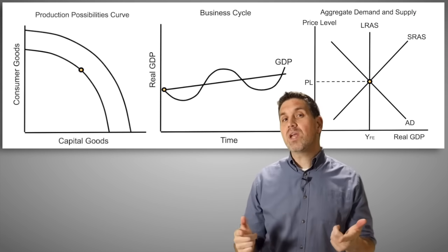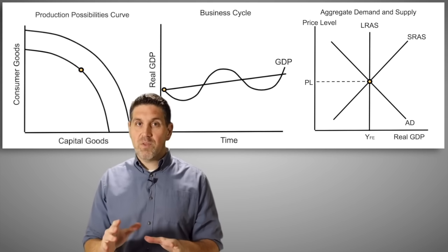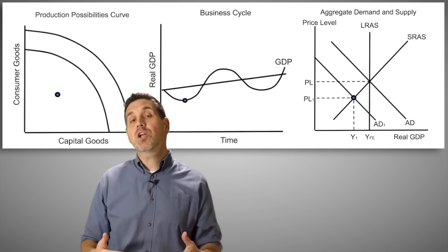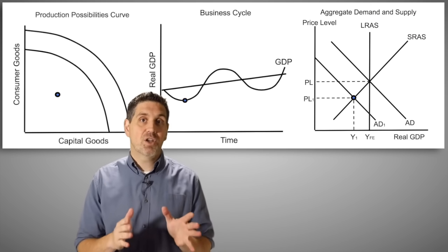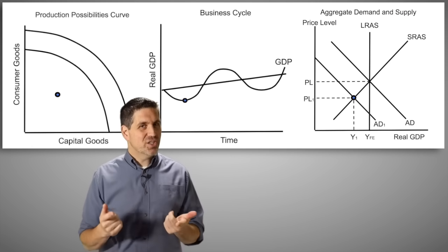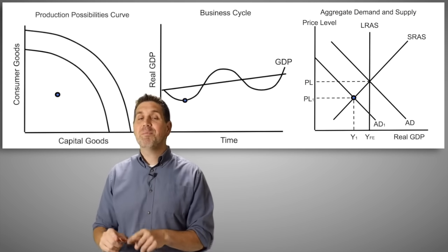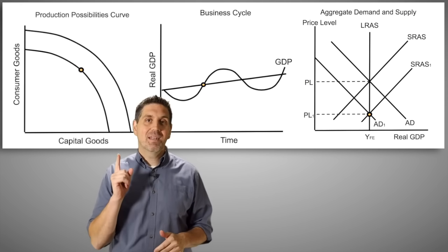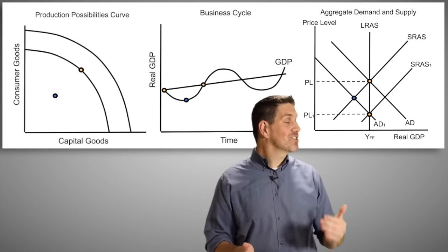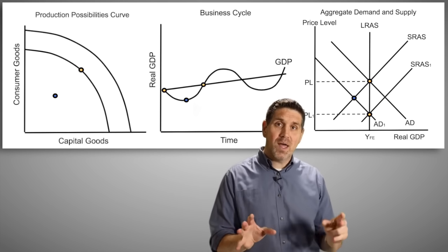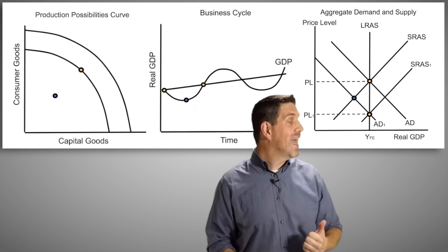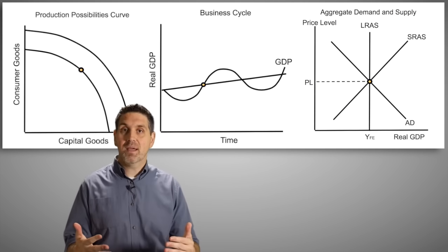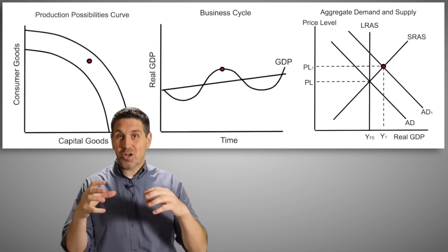Let me show you that again on the three graphs. We start at full employment, but then consumer spending falls, there's a decrease in GDP and an increase in unemployment, and we end up with a recessionary gap or negative output gap. In the long run, wages and resource prices will fall, aggregate supply will increase, and we'll end up back in the long run. That explains why the long run aggregate supply curve is vertical. Now let's do the other side: starting at full employment with an increase in consumer spending, aggregate demand increases, unemployment starts to fall, and we end up with a positive output gap or an inflationary gap.